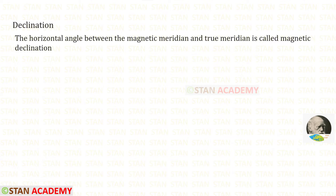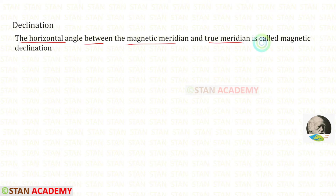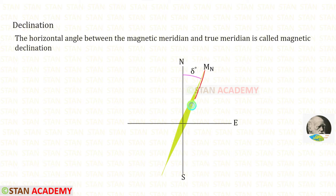Hello everyone. Today we are going to see what is declination and we are going to see some problems based on declination. The horizontal angle between the magnetic meridian and the true meridian is called the magnetic declination. The angle between the magnetic meridian and the true meridian is called the declination.